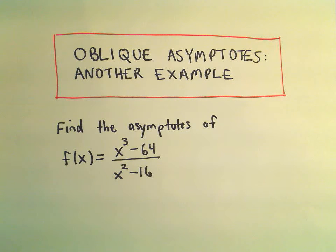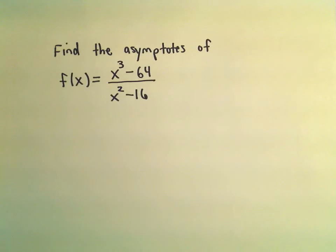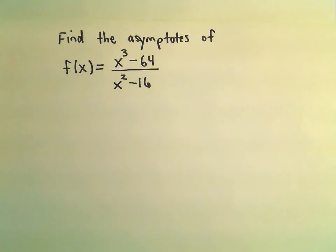Alright, in this video, I'm going to do another example of finding all the asymptotes of a function. So here we have f of x equals x cubed minus 64 over x squared minus 16.